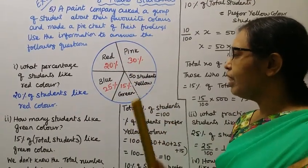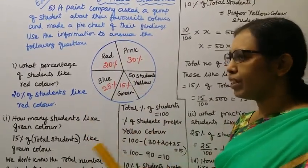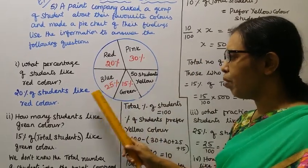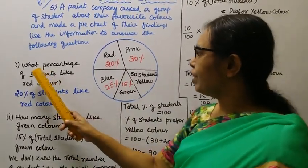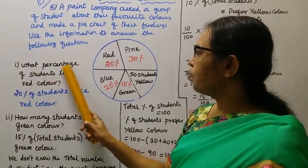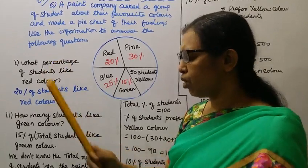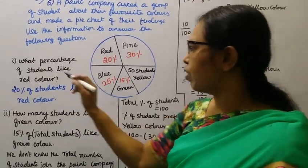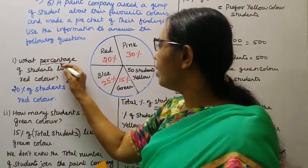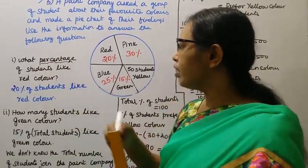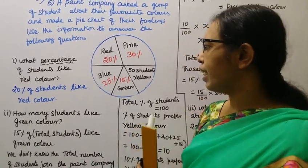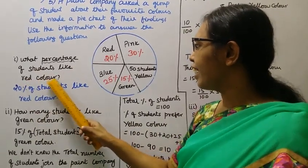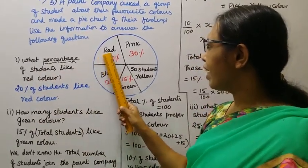First question: What percentage of students like red color? The answer is 20% of students like red color.